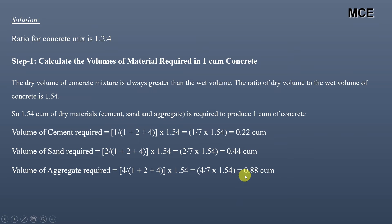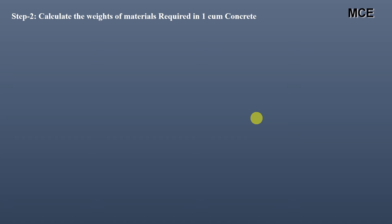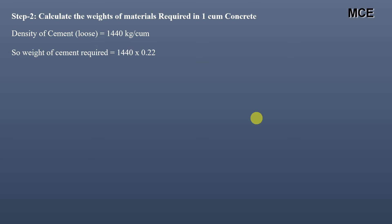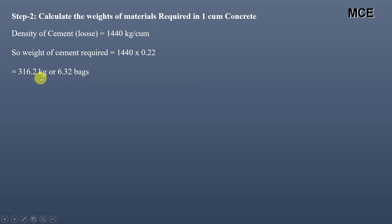Now after finding the volume, we can find the weight of these materials. Simply multiply the volume by the density of the material. The density of cement is 1440 kg per cubic meter, so weight of cement = 1440 × 0.22 = 316.2 kg. Dividing by 50 (since one cement bag contains 50 kg), that gives 6.32 bags required to produce 1 cubic meter of wet concrete.